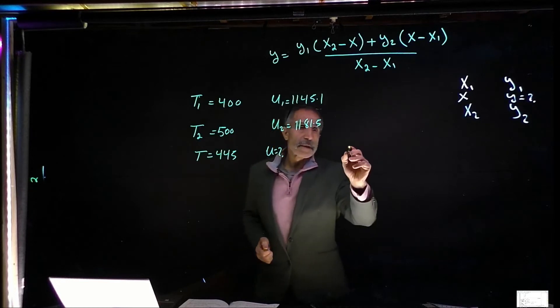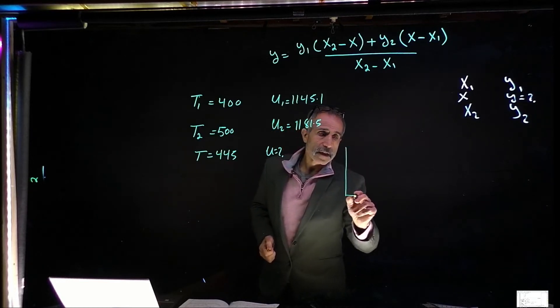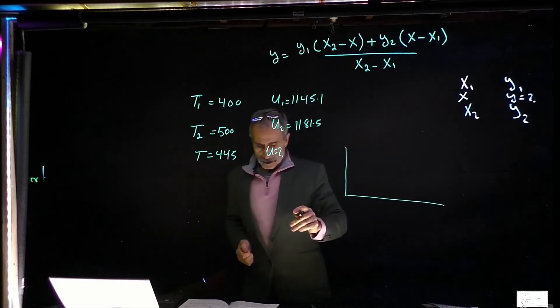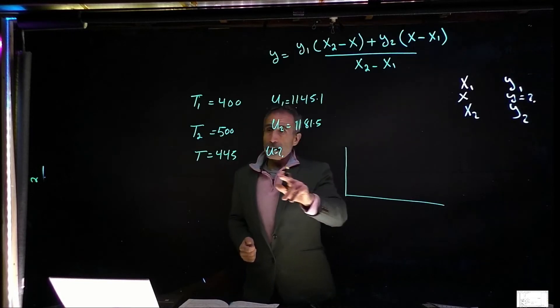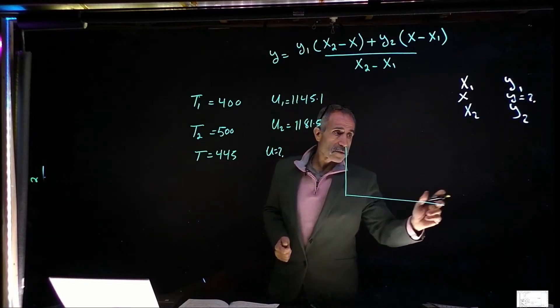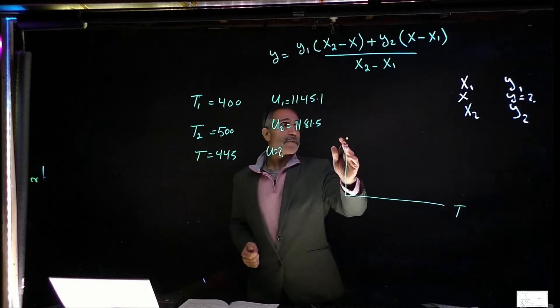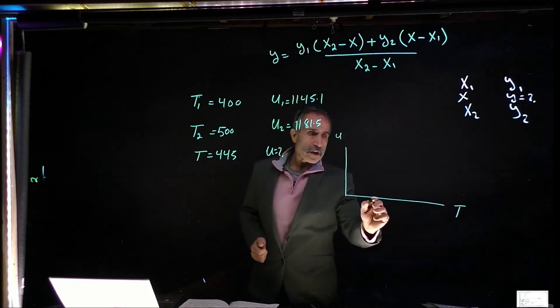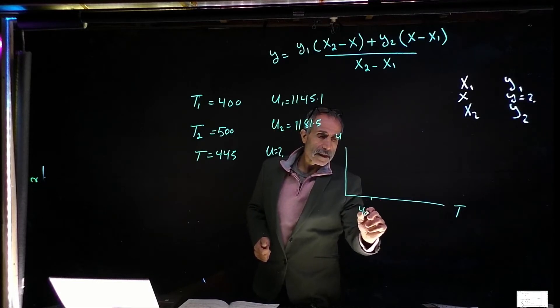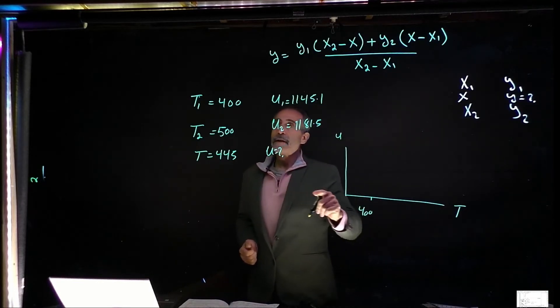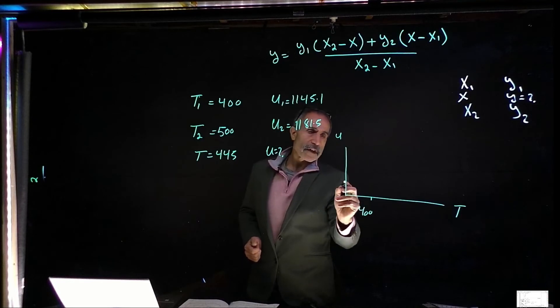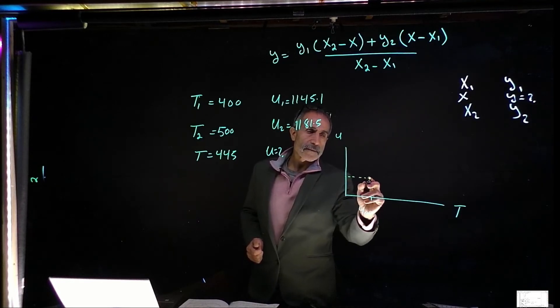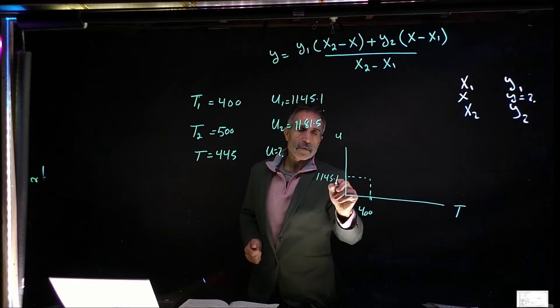We can do this by, I'm going to go ahead and draw a line right here. And let's call this bottom one should be always x. We call this a T for this equation. And top should always be bar. We call it u for this one. So at 400 degree, I was given 1145, say 1145 is right here. So this is 1145.1.